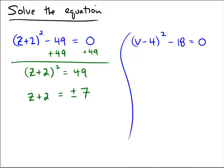It's either plus or minus. So, therefore, if we subtract 2 from both sides, we end up getting z = -2 ± 7.